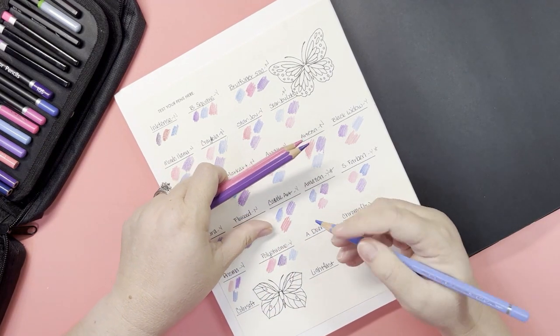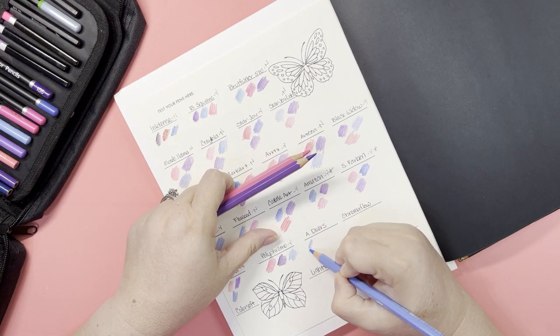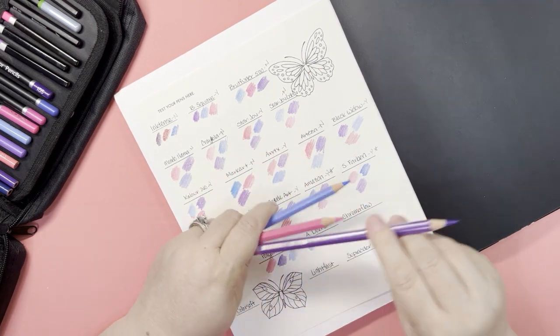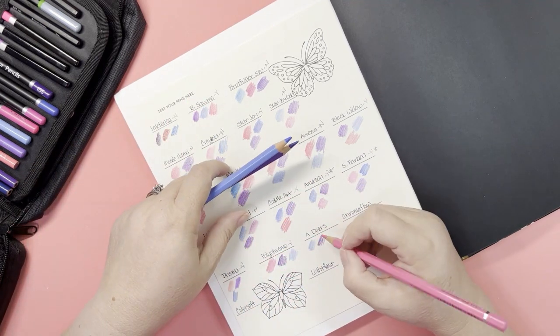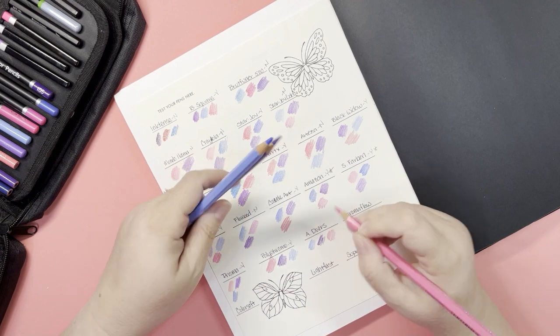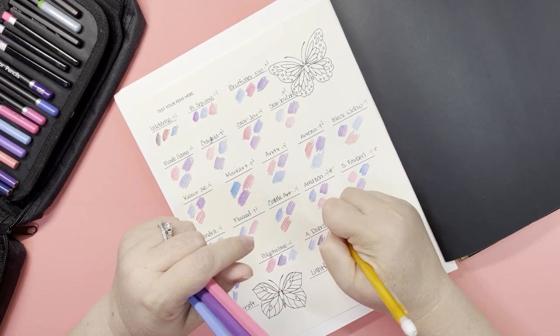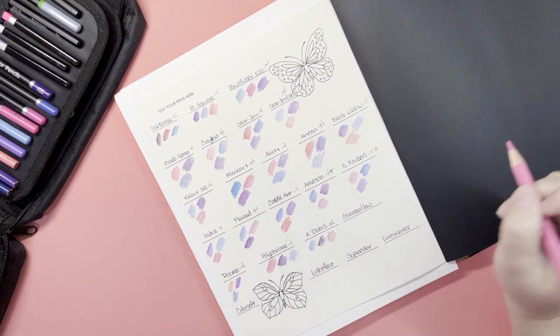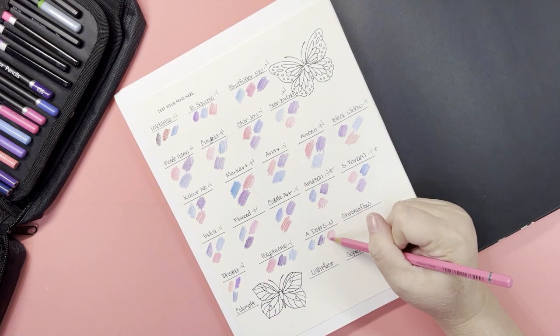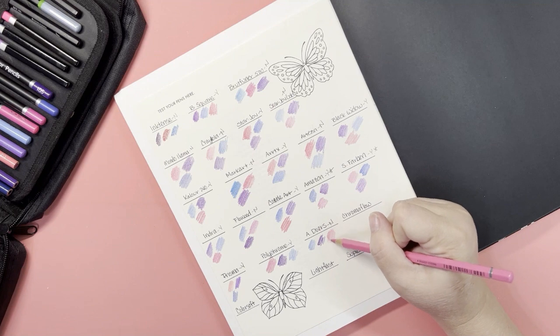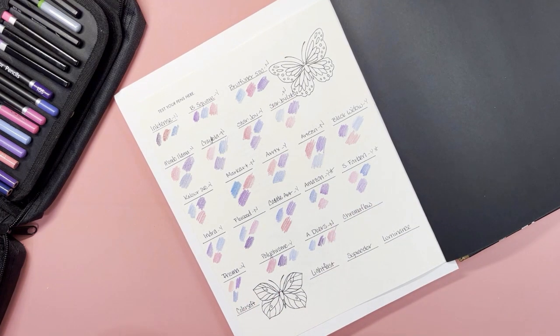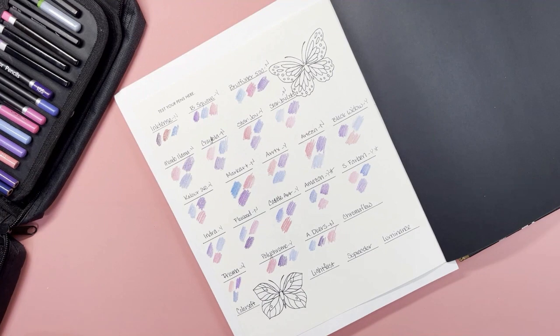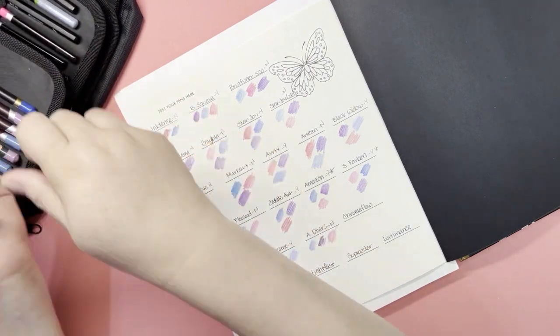The next ones I have are my Albrecht Durer, which are the Faber Castell watercolor pencils, but I know there are people out there that use these dry. These to me feel like the Inktense. I would not want to use these dry, so I'm going to say no. They want to stick. So what I mean by they want to stick is like it doesn't feel like I could just color nicely, it feels like they just want to stick. I don't know if that makes sense. I hope that makes sense.